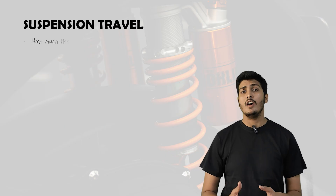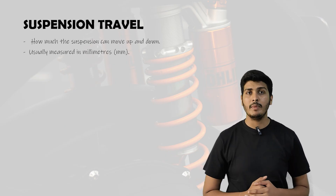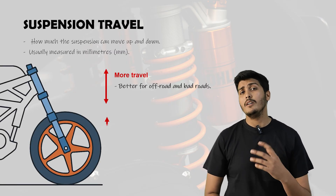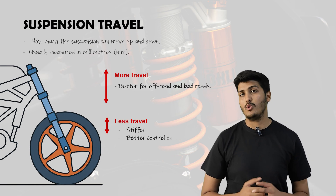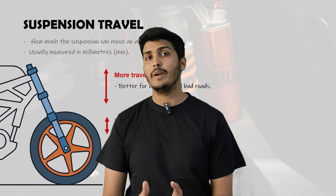Now that we have understood how suspension works, let's go over some basic terms you will often hear when discussing motorcycle suspensions — commonly used by mechanics in spec sheets and among bike enthusiasts. Number one is suspension travel: how much your suspension can move up and down, usually measured in millimeters. More suspension travel is better for off-road and rough roads; less travel makes the suspension stiffer, providing better control on smooth roads. For example, dirt bikes have more suspension travel compared to sports bikes.